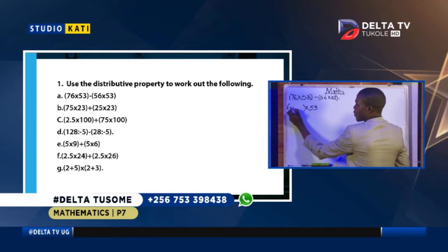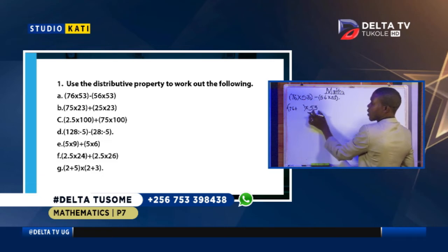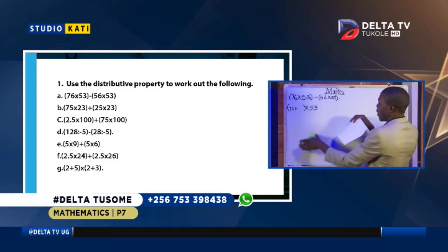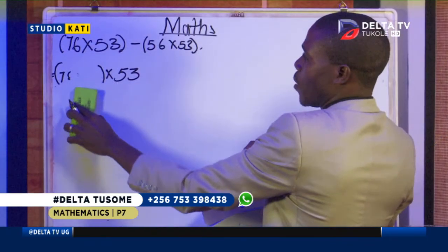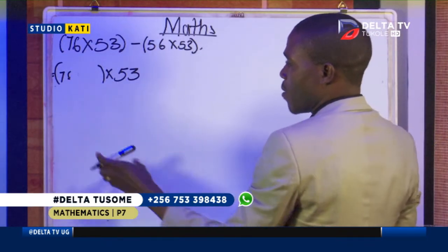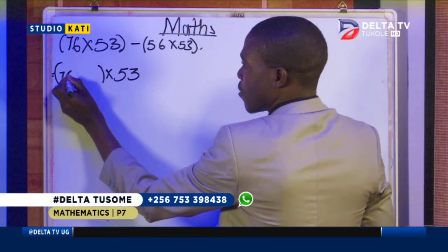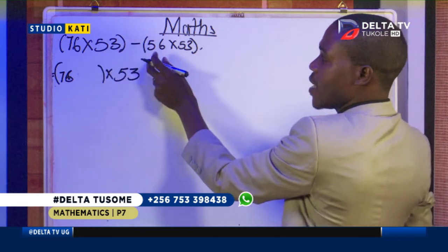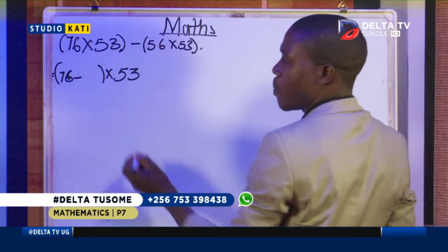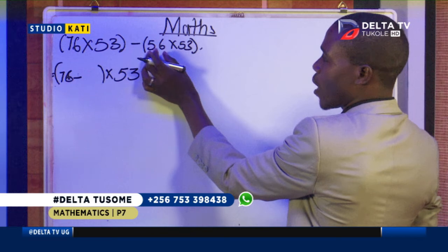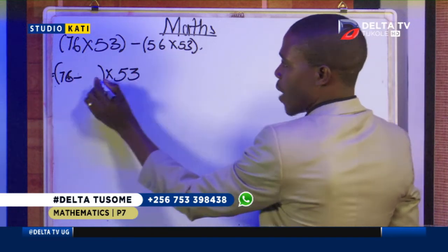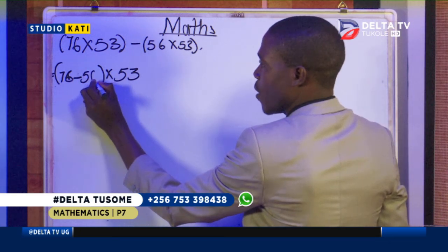So here we shall have 76. We've taken away the 53 — it is already written. We now remain with this. What is remaining? We have 76 remaining in this bracket. Then the operation joining the two brackets is a subtraction, say minus. Now come to the other bracket — what is remaining is 56, so we shall say 56.